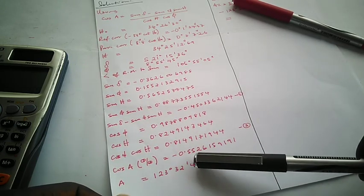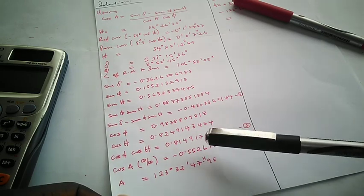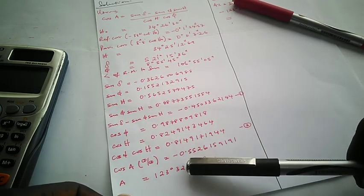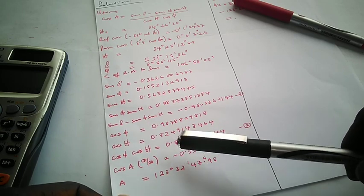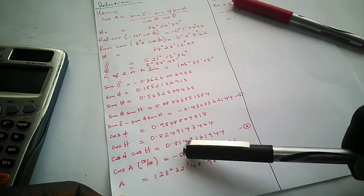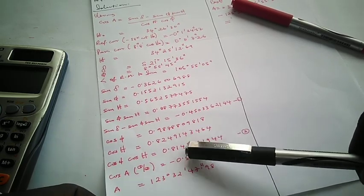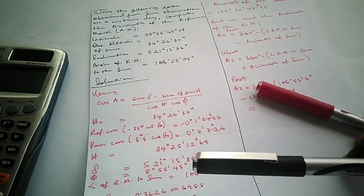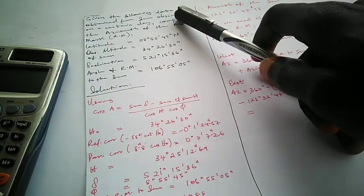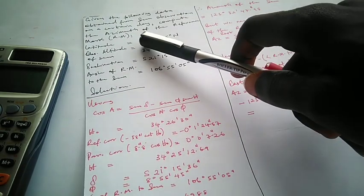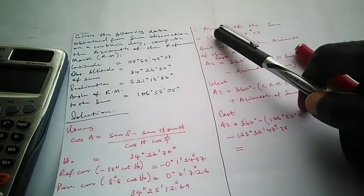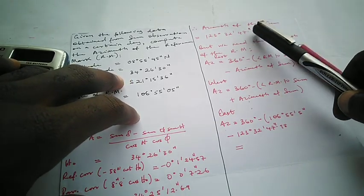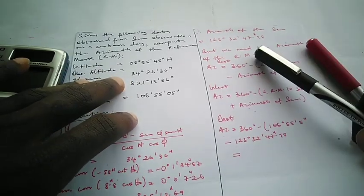Taking the inverse cosine of the computed value gives 123° 32' 47.98". This is the azimuth of the celestial body — in this case, the sun. However, the question asks us to compute the azimuth of the reference mark, not just the sun.